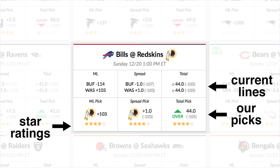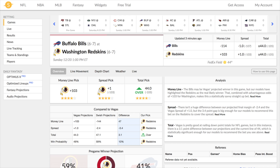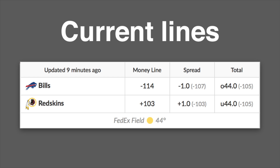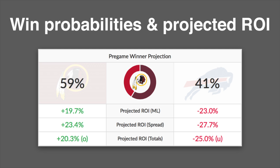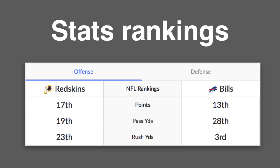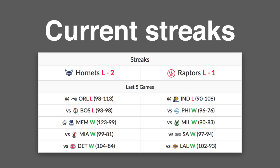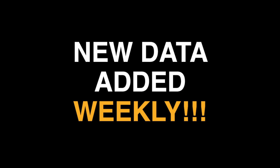We'll cover those stars in a second. You can click into each card to find more data and analysis. Here you'll find: current betting lines, our picks, comparisons of our projections to Vegas odds, win probabilities and projected return on investment for each team and bet, contextual analysis of each pick, injury updates, stat rankings for each team, current streaks, historical line movement, weather updates, and much more. We add new data and analytics blocks every week.